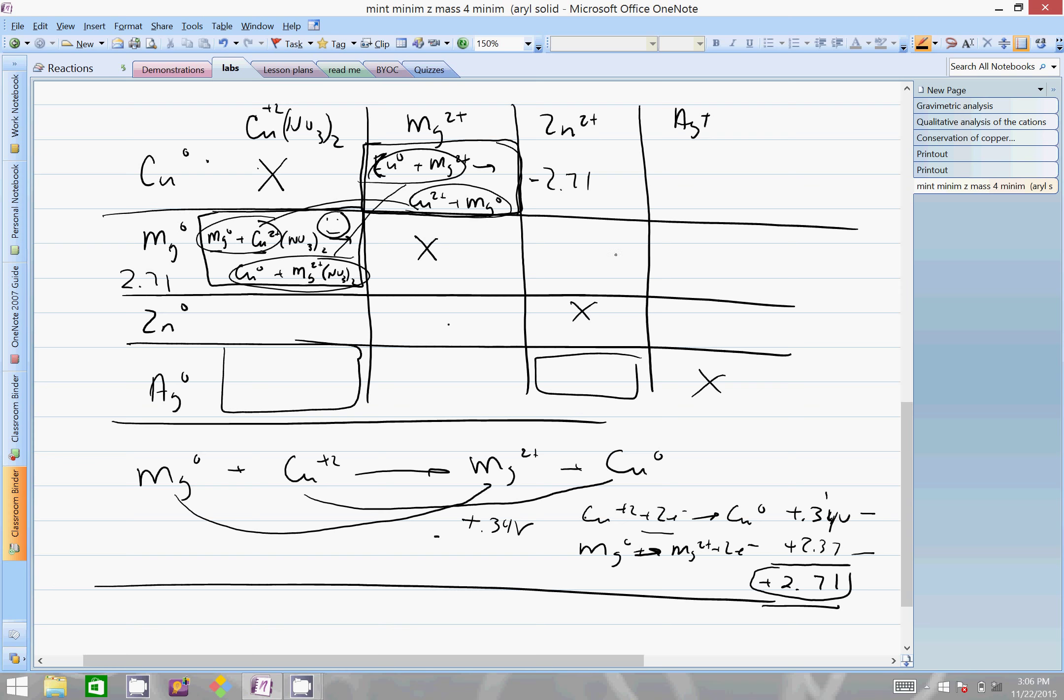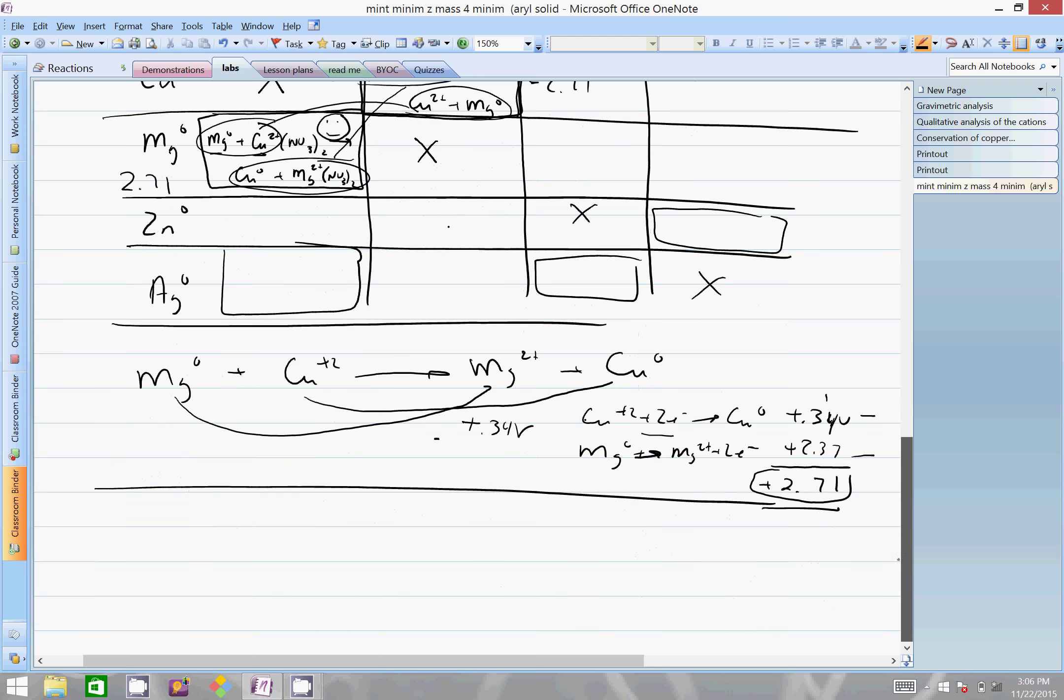Let's do the silver and zinc. Here's silver and zinc right here. I got my silver metal plus zinc nitrate 2+ goes to zinc metal plus Ag+. It's not balanced, so you put a two here and a two here, but I'm just worried more about the voltages than anything.